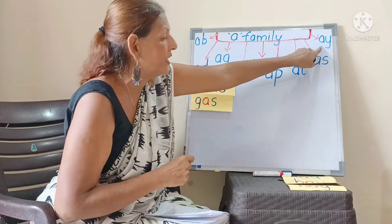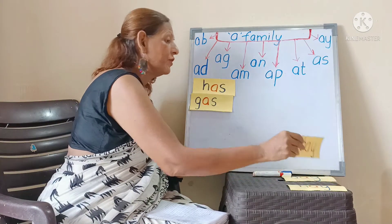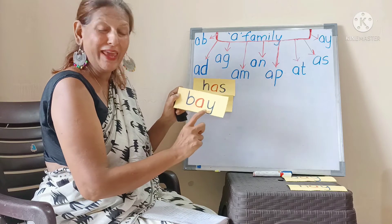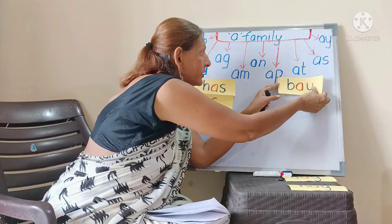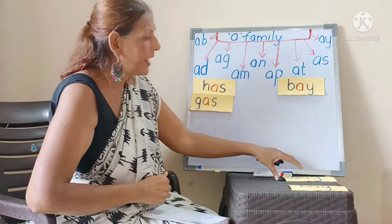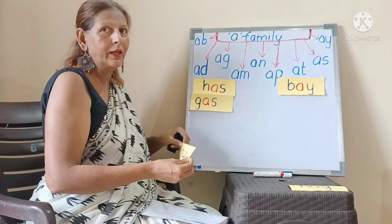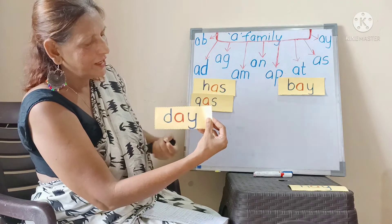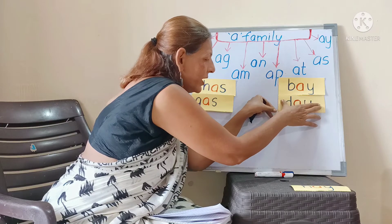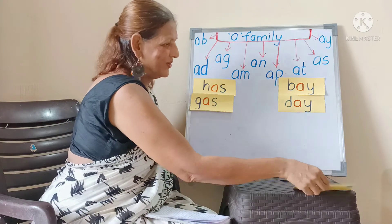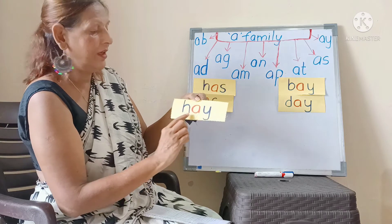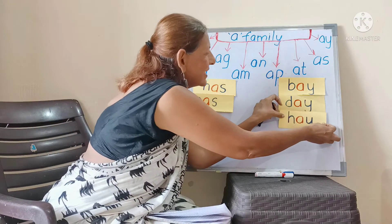Now let's see what we have with the 'ay' family. B-ay: bay. The next one is D-ay: day. And one more — H-ay: hay. Now I am going to stick these over here.